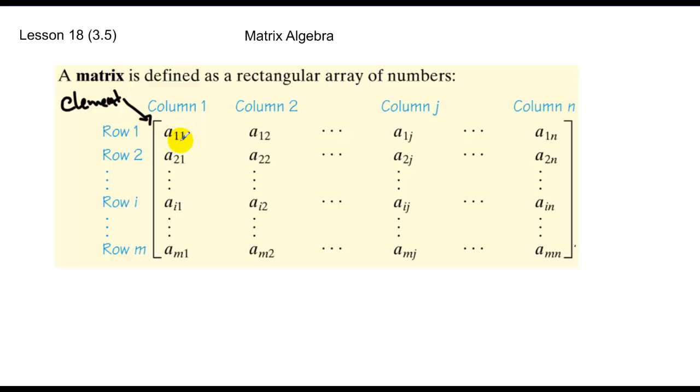So you'll notice 1-1, first row, first column, 1-2, first row, second column, etc. As we move down, second row, first column, so on and so forth.